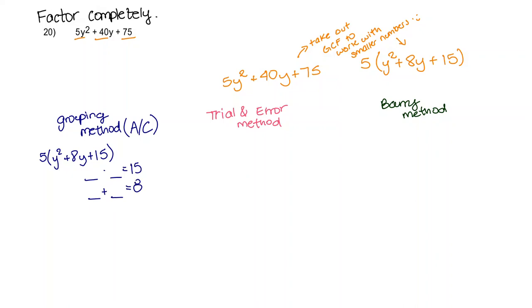Referring back to Ax squared plus Bx plus C: my A is 1, my B is 8, and my C is 15. The factors of 15 are 1 and 15, and 3 and 5. The numbers that multiply to make 15 and also add to make 8 are 3 and 5.